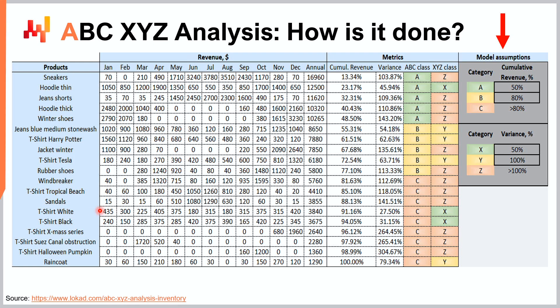White t-shirt was a C-class SKU with an average of 320 units sold per month. The actual monthly sales varied, but this variance was relatively low — 27.5% — meaning sales were mostly stable across the year. For this reason, white t-shirt was a CX SKU, as it generated low revenue and low variance. This variance is what the X, Y, and Z classes are designed to express.